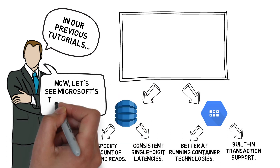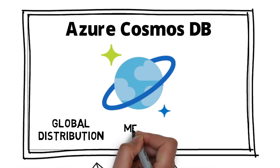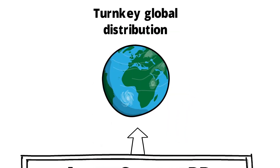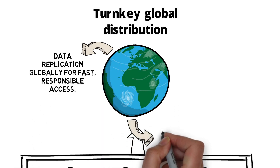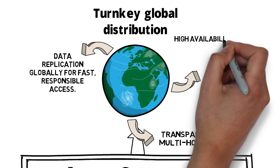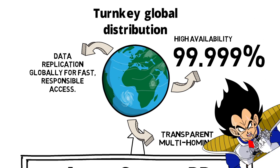Let's look at Microsoft's take on the DB market with Cosmos DB — where global distribution meets horizontal scaling. One of Cosmos DB's features is turnkey global distribution. Data replication happens globally for fast, responsive access. Multi-homing APIs ensure your application can operate against logical endpoints, meaning requests to your data are routed according to regions, even if there are failovers. By all this, we gain 99.999% high availability, guaranteed in the SLA from Microsoft.